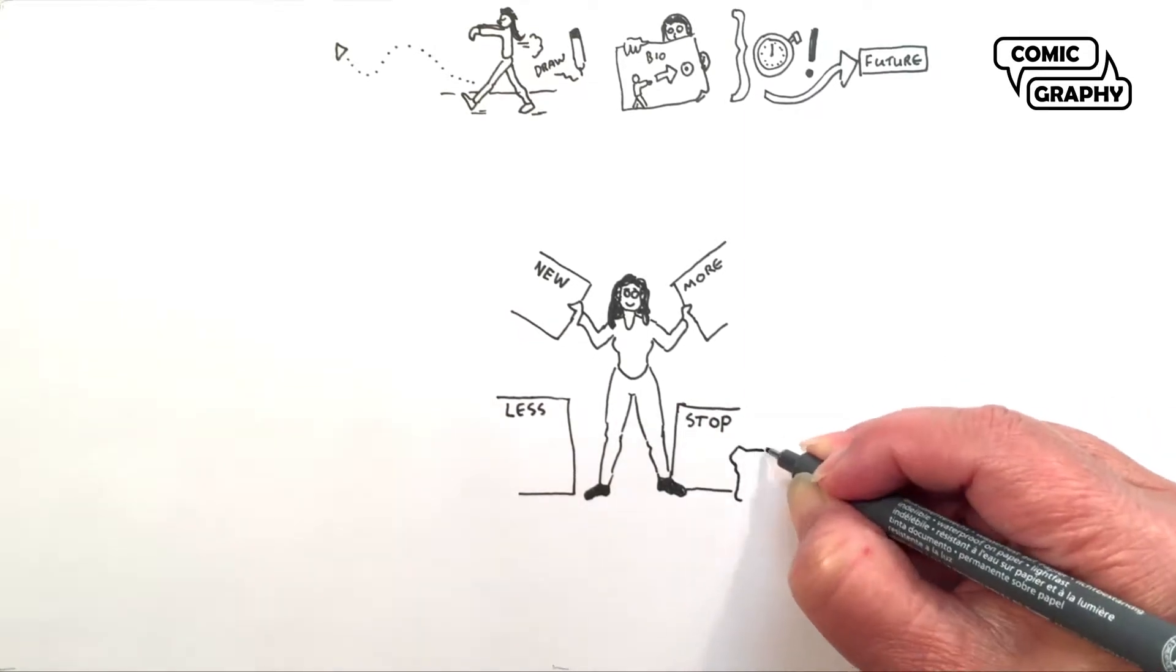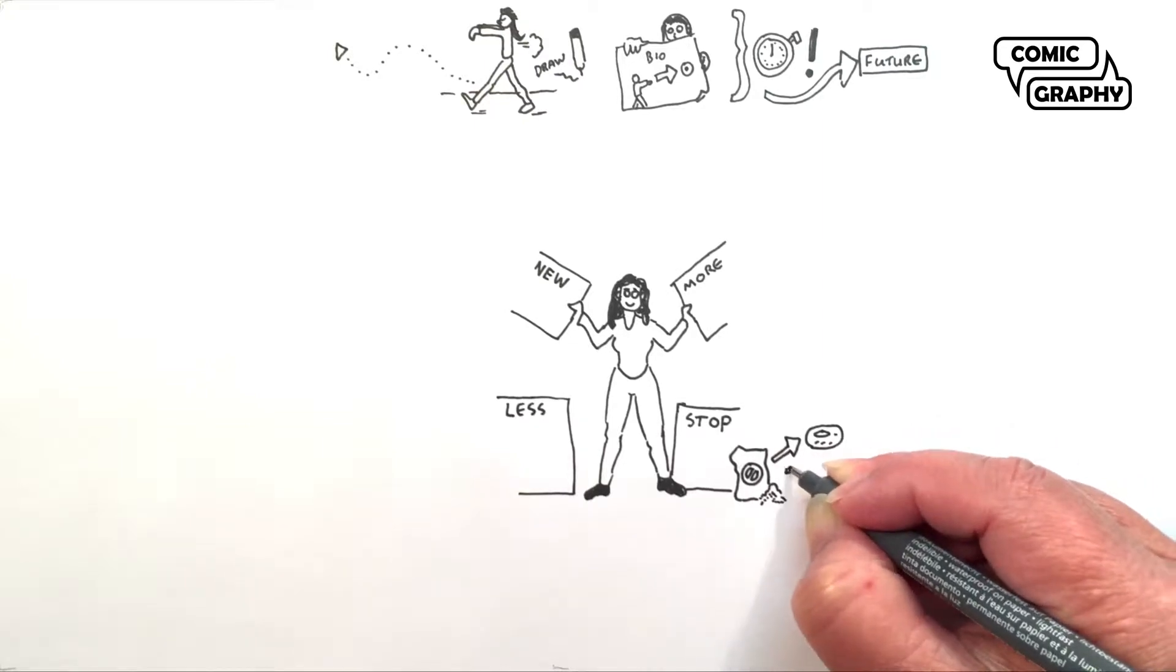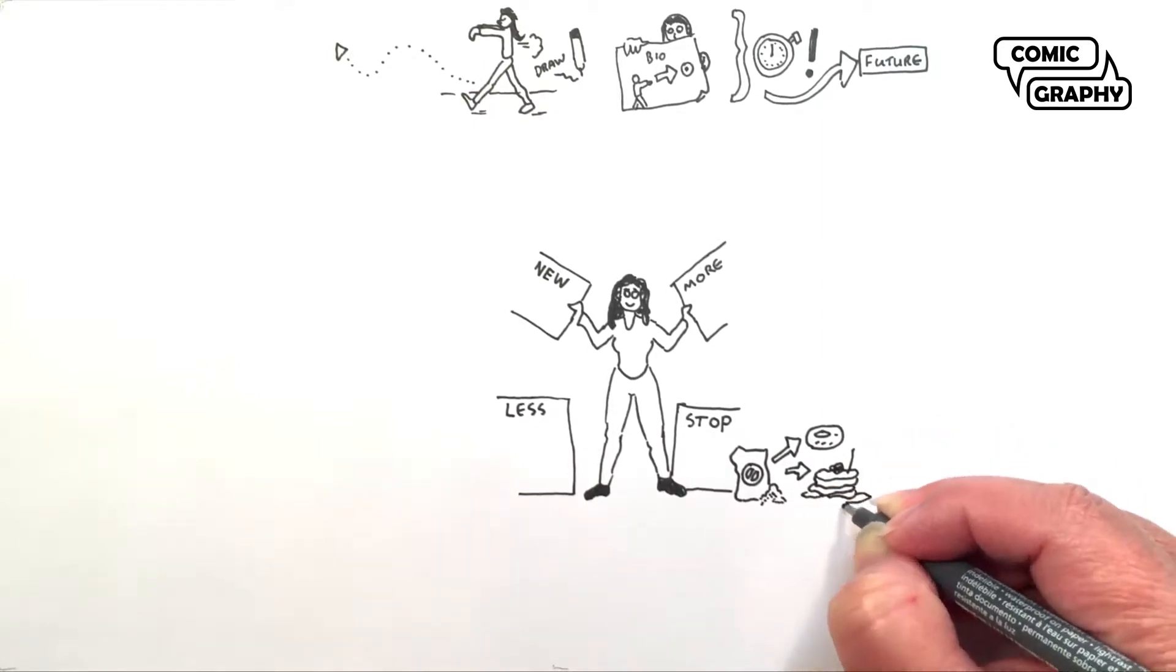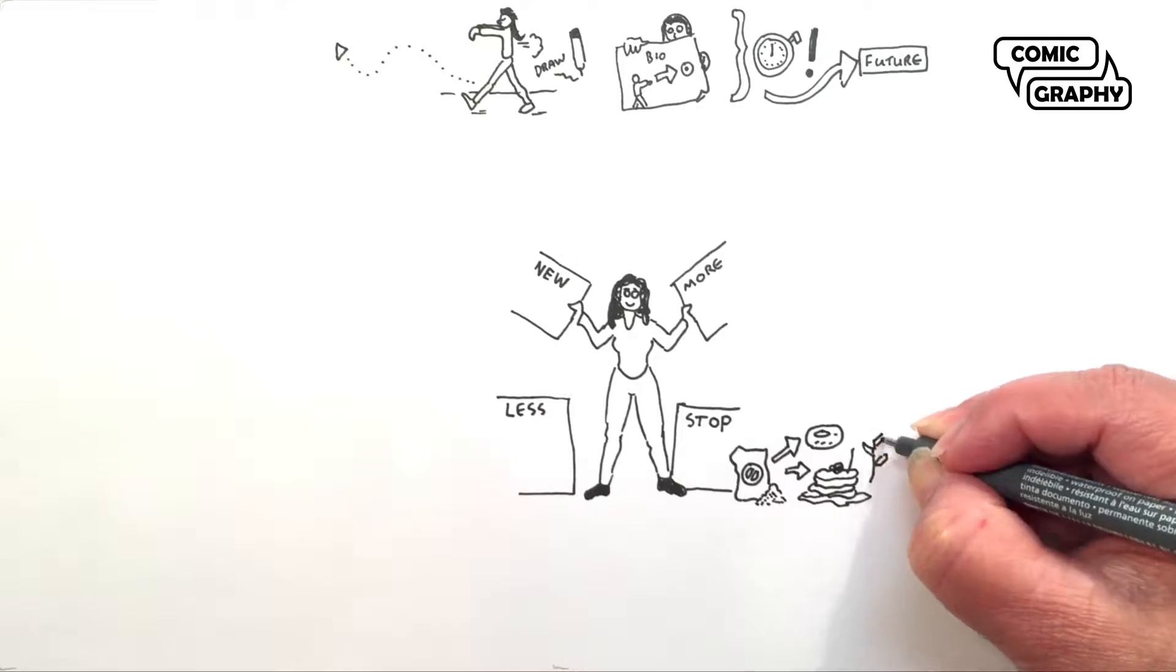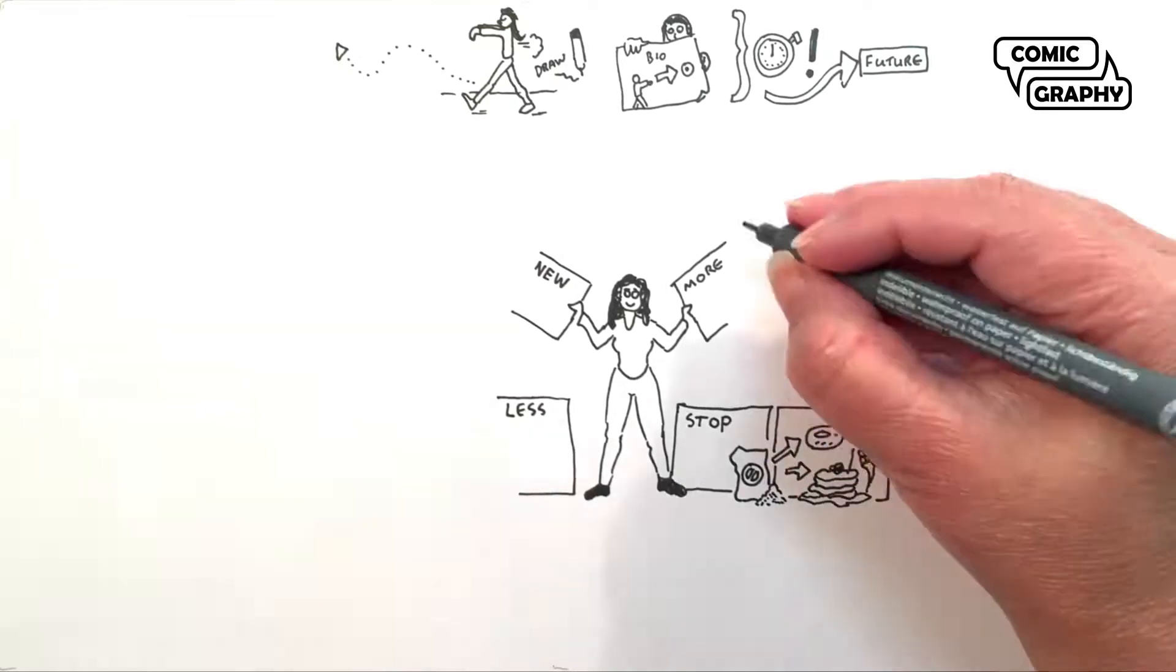You can start wherever you want. I will start with the things that I really need to stop. I need to stop eating flour products, or things made of wheat. So I draw those in the stop box.